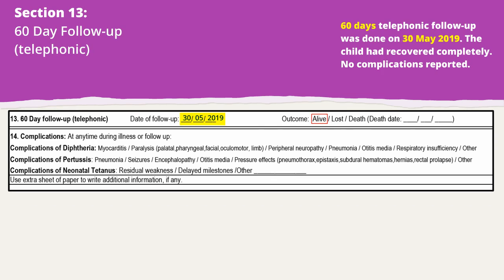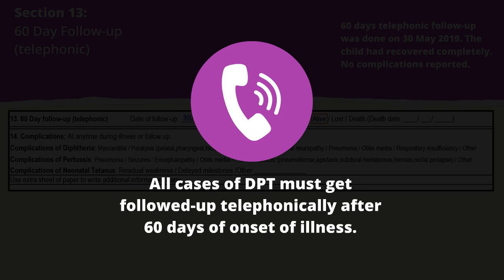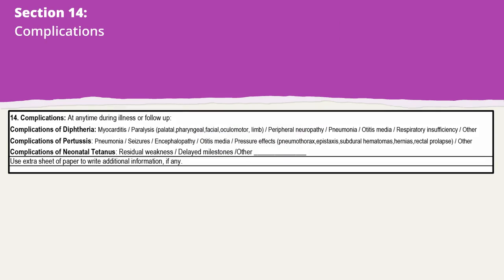A 60-day follow-up is an important aspect of epidemiology to know the outcome or complications. Ensure that all cases of diphtheria, pertussis, and neonatal tetanus are followed up telephonically after 60 days of onset of illness. Section 14 is the last section — encircle the complications observed or found at any time during illness or during follow-up for the concerned disease.